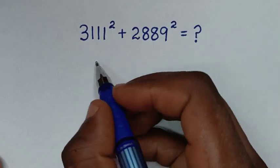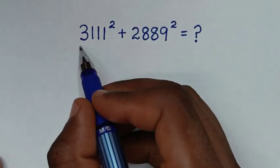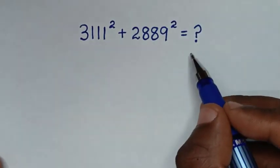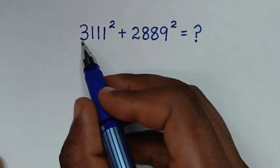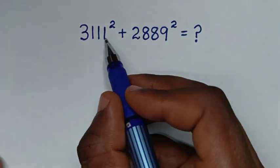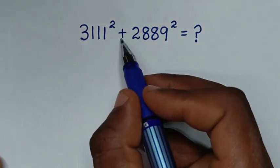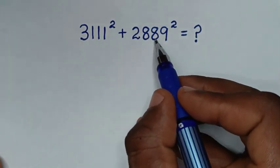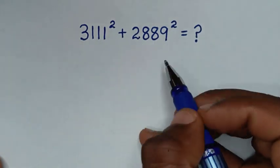Hello, you are welcome to solve this math problem, which is 3,111 squared plus 2,889 squared.